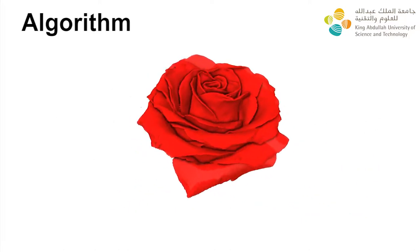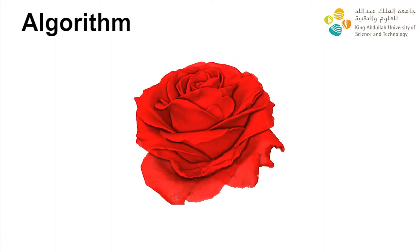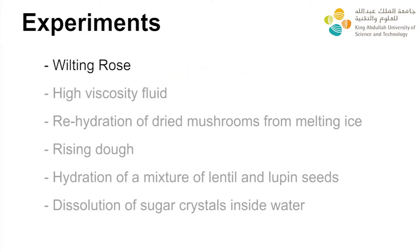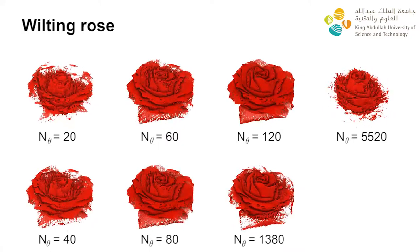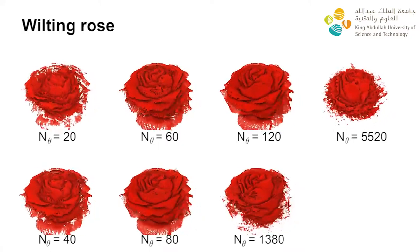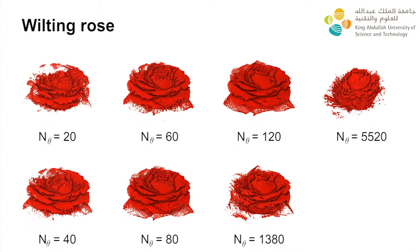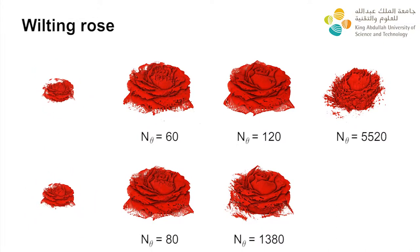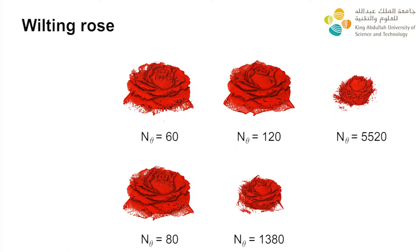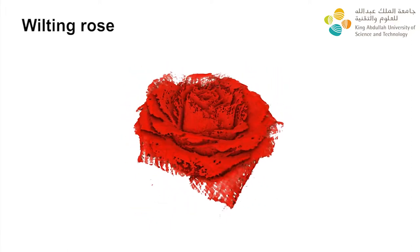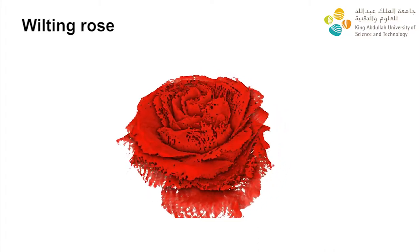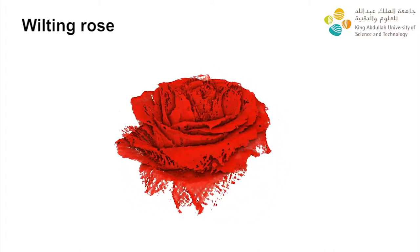Our approach improves the accuracy of the reconstruction compared to baseline methods. Our first results are obtained for a wilting rose, scanned during a time frame of 9 hours and 32 minutes. The number of projections used in the reconstruction of each time frame, N-theta, has to be selected. It should be as high as possible to ensure a good reconstruction for complex structures, but small enough to avoid motion artifacts due to large deformations. For the rose case, setting N-theta to 60 is the best choice, ensuring good reconstruction of geometric features with negligible deformations during each time frame.